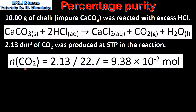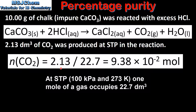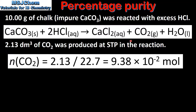The first step is to calculate the amount in moles of carbon dioxide produced in the reaction. We divide the volume of carbon dioxide by the molar volume of a gas at STP, which is 22.7 dm³. This gives us 9.38 × 10⁻² moles. The molar ratio of carbon dioxide to calcium carbonate is 1 to 1. Because calcium carbonate is the limiting reactant, 9.38 × 10⁻² moles of calcium carbonate must have reacted to produce the same amount in moles of carbon dioxide.